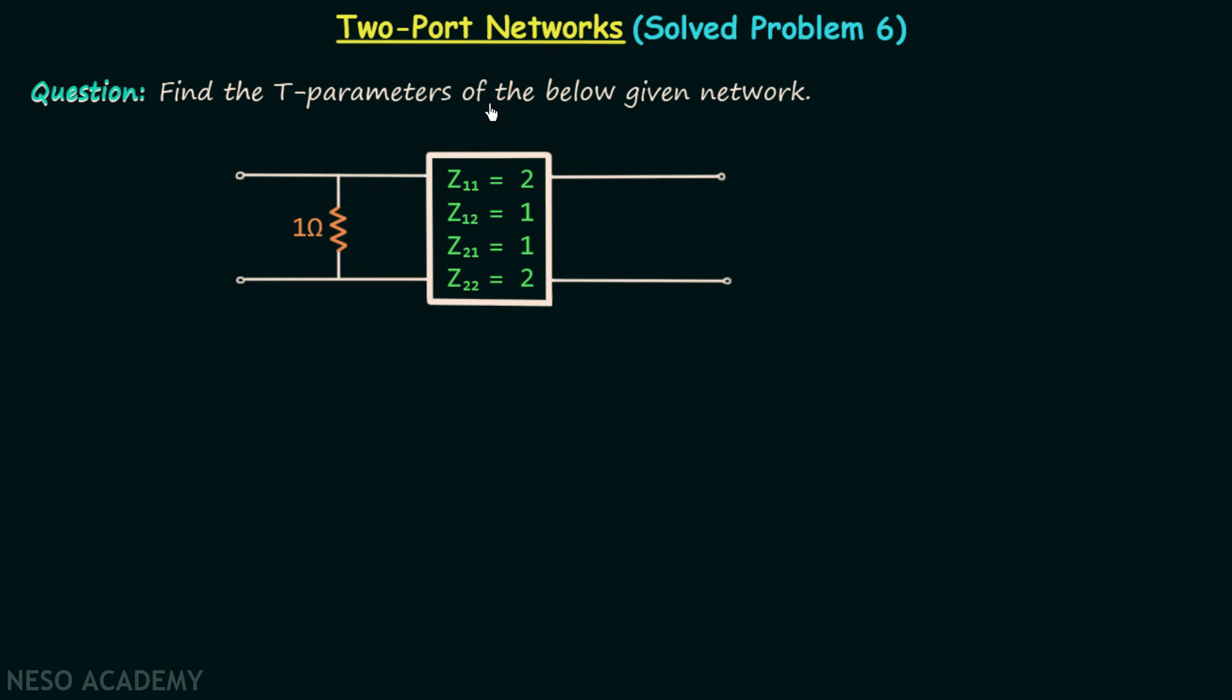Find the T-parameters of the below given network. This is the two port network given in the question, and we are required to find the T-parameters or ABCD parameters of this two port network.